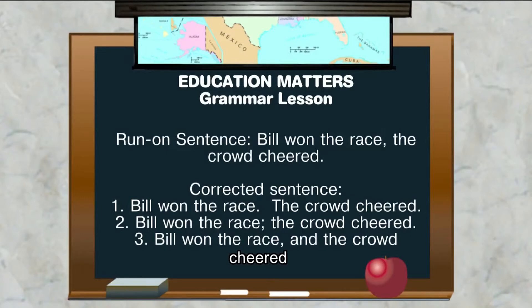Sentence two: "Bill won the race, semicolon, the crowd cheered." That's another correct way. And then finally, with a conjunction: "Bill won the race, comma, and the crowd cheered."